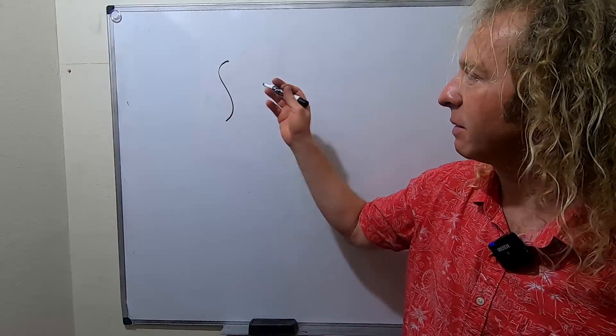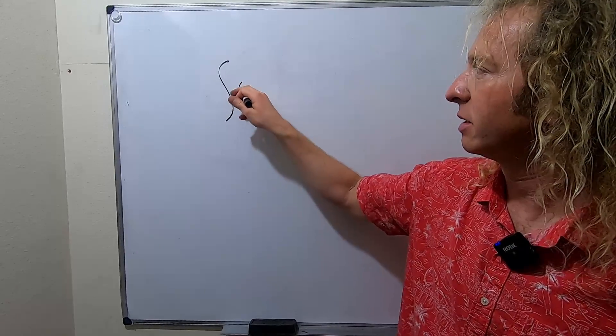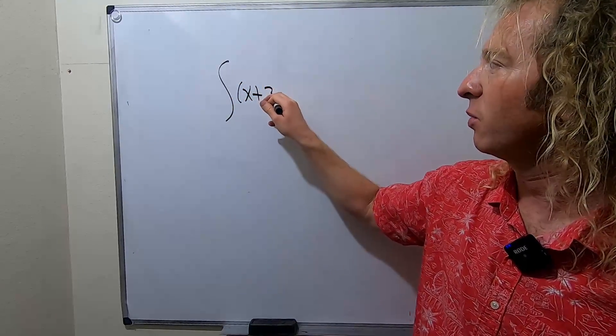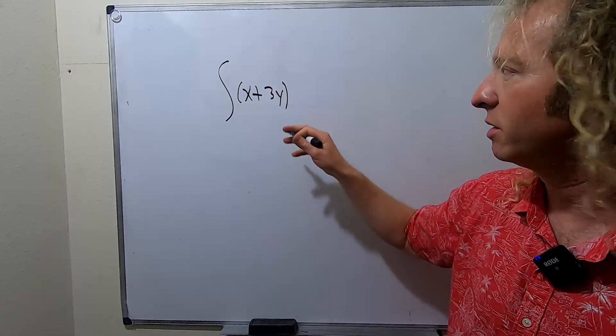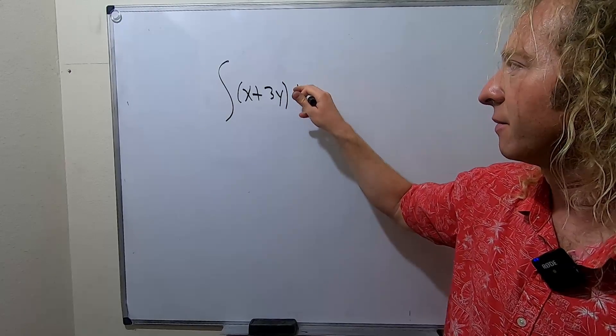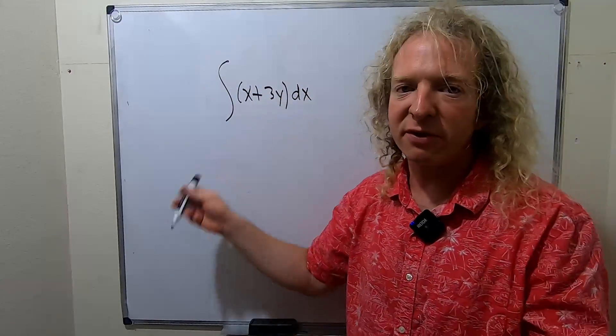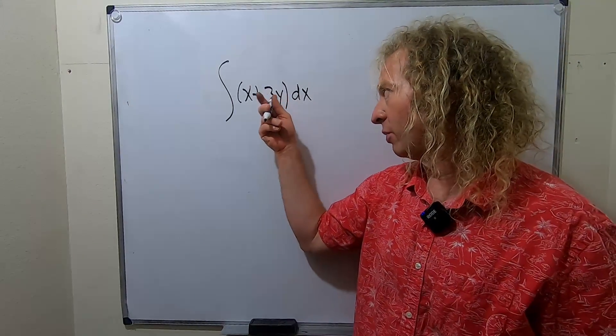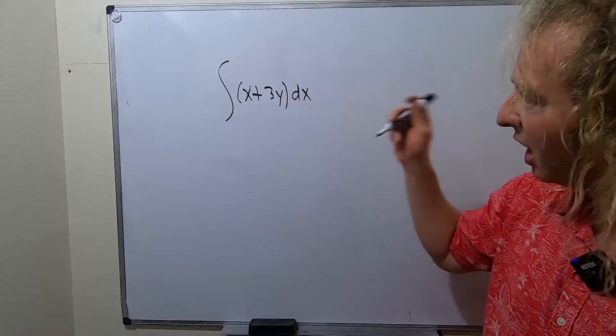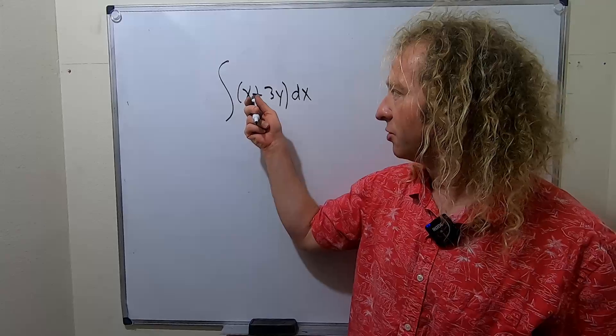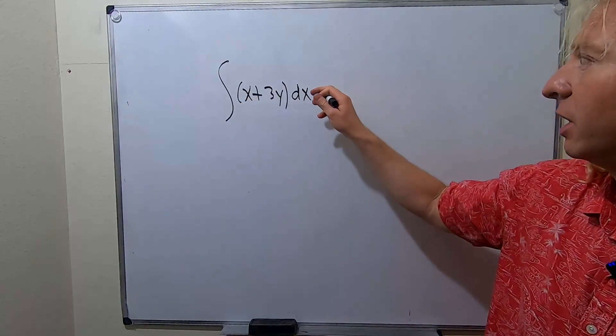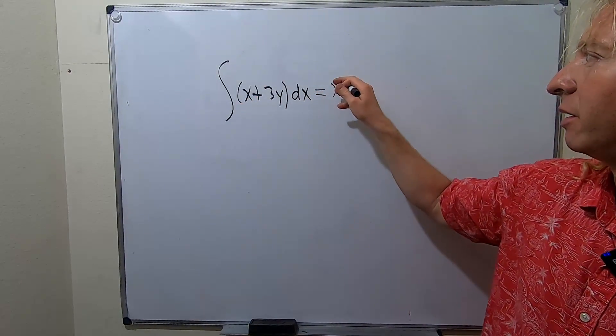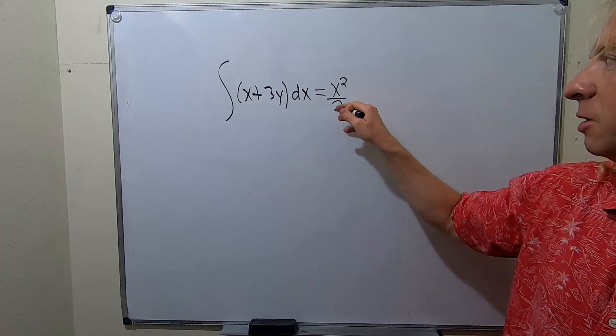So let's say you have something like x plus 3y, and you want to integrate this with respect to x. We're not going to put any limits of integration here. We're just going to jump in and do it. So here we have two variables, and we're integrating with respect to x. So you integrate the x, so you simply get x squared over 2. You put your plus sign.